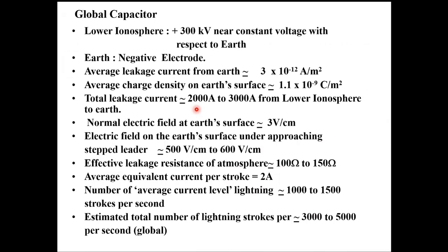The average charge density on Earth's surface is approximately 1.1 × 10⁻⁹ coulombs per square metre. If you consider the whole Earth's surface, multiplying the current density of 3 picoamperes per square metre by the total surface area, the total leakage current will be approximately 2,000 to 3,000 amperes, leaking from the lower ionosphere to Earth. Why does it leak? If air were an ideal dielectric, this current would not exist at all.